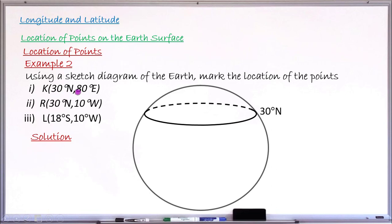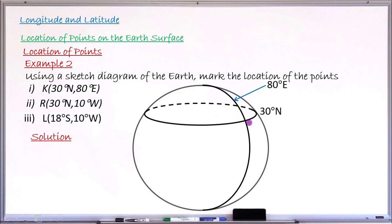Now I'll draw longitude 80 degrees east. Remember, the prime meridian divides the earth into east and west, so the eastern longitudes are to the right of the prime meridian. I draw longitude 80 degrees east to the right of the middle. Where this longitude crosses latitude 30 degrees north is the position of point K. I'll mark that point as K.